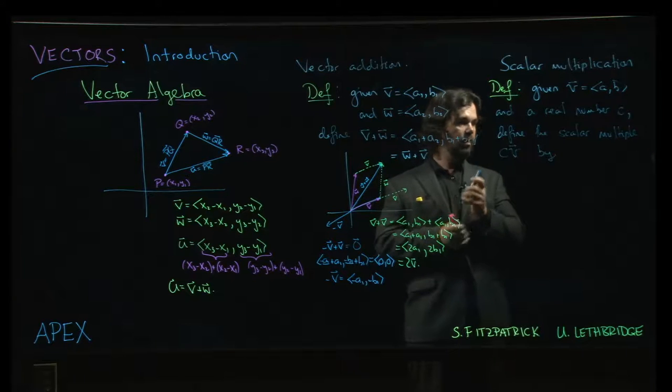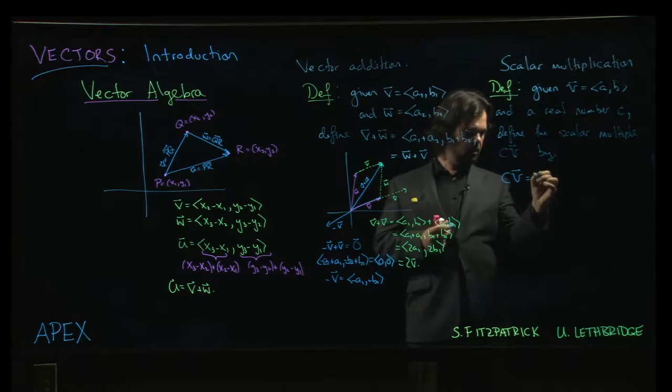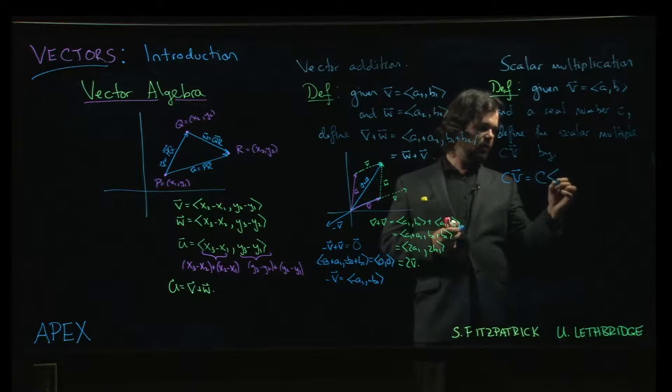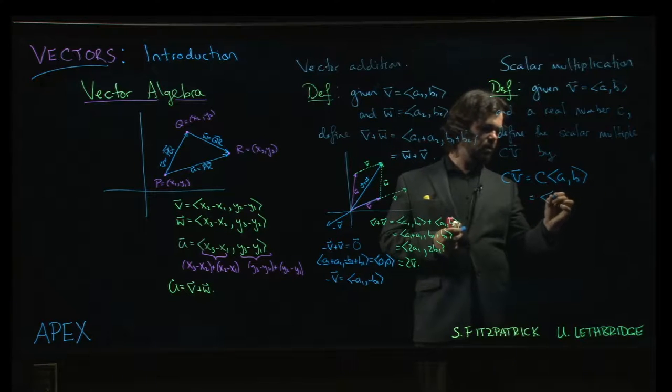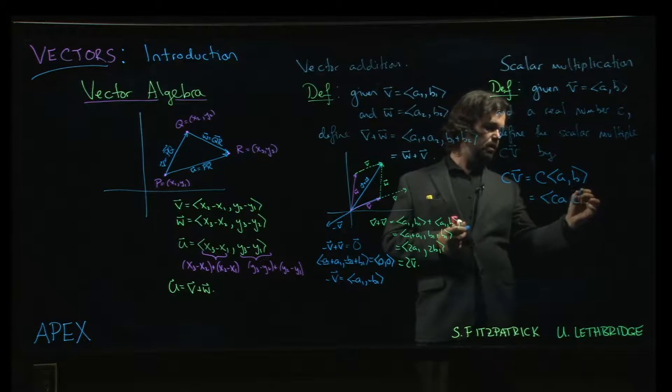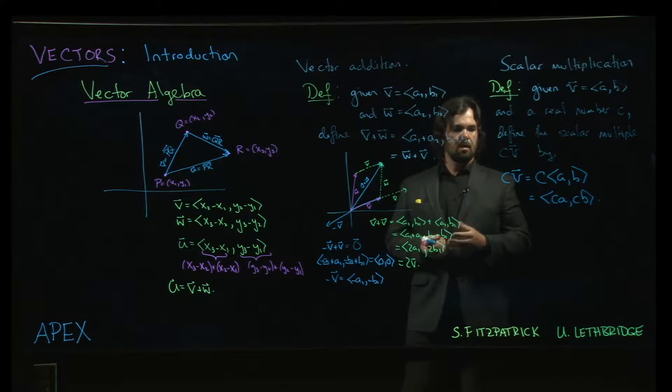c times v, or if you like, c times (a, b) is just (c times a, c times b).